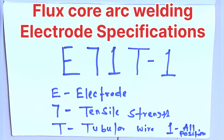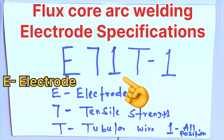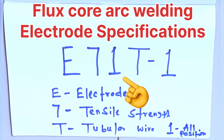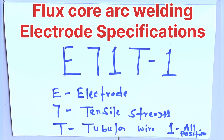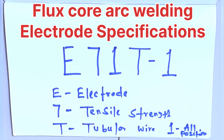What is the meaning of E71T-1? 'E' means electrode. '1' means all positions — overhead, flat, horizontal, vertical up, vertical down — and also 2G, 1G position, and overhead positions like 4G, 5G, and 6G. You can weld in any position. 'T' stands for tubular, meaning it is a tubular wire. The last '1' refers to the chemical composition of the filler weld metal. That is the meaning of E71T-1.